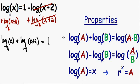This is where we need to use the properties I wrote for you on the right hand side. Whenever you have two logs being added with each other, you can use the first property written in blue. It says that log(a) plus log(b) can be rewritten as one single log, and inside the parentheses you just multiply a times b. So x inside our first parentheses is our a, and x + 2 inside our second parentheses is our b.